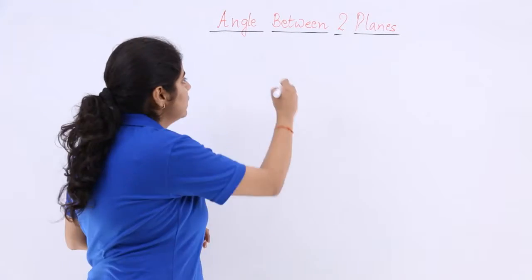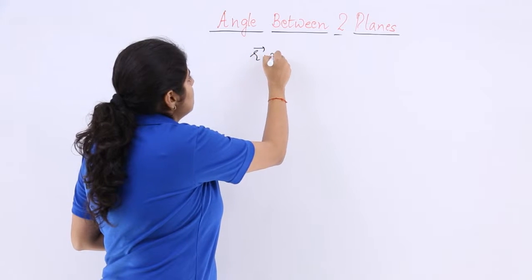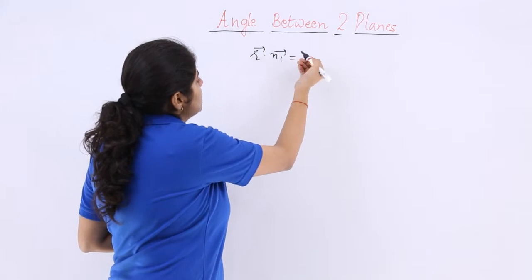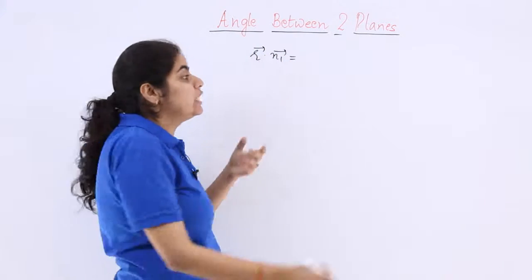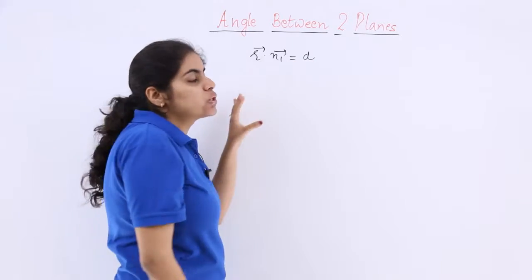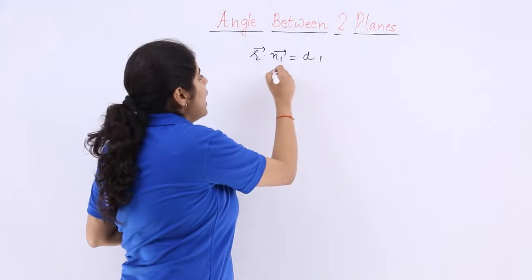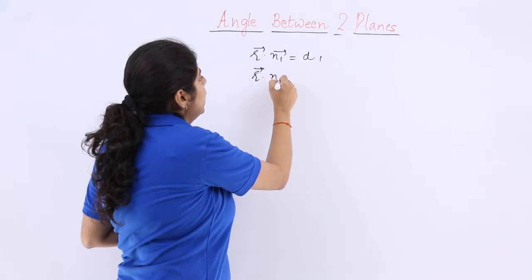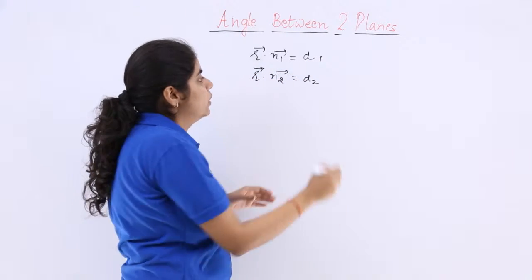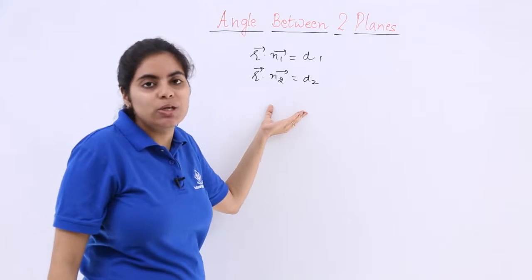So if you have to talk about the vector equation, there are two equations in front of you. Supposedly r.n is equal to d is an equation. So r.n1 vector is equal to d1 and r.n2 vector is equal to d2. If you have been given these two equations,